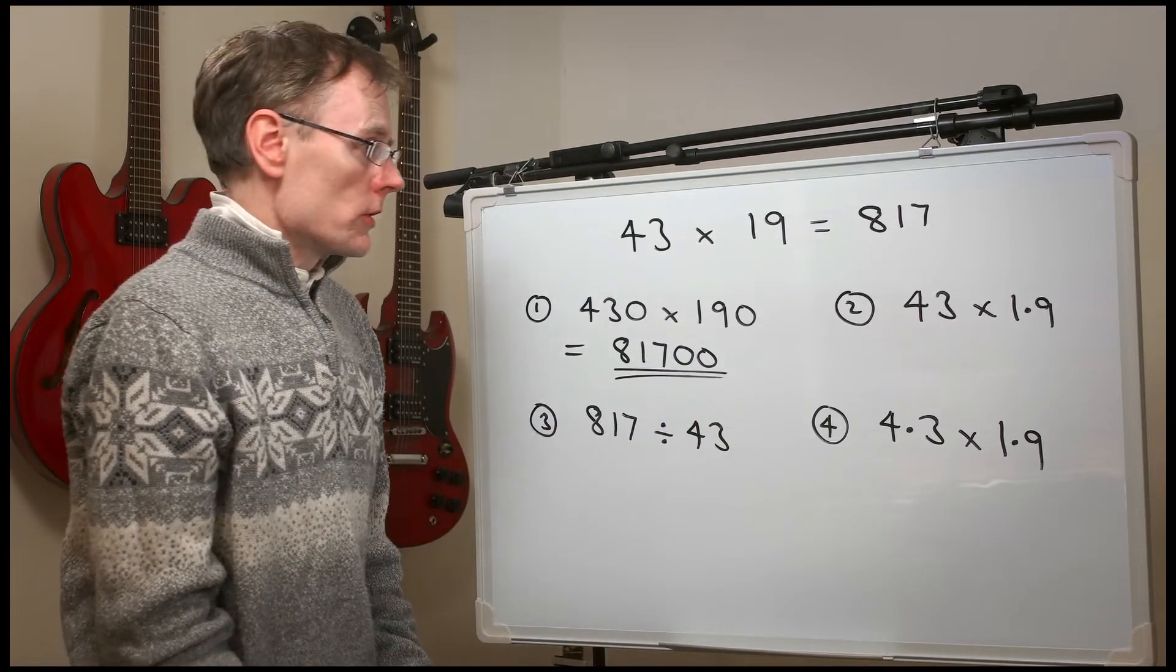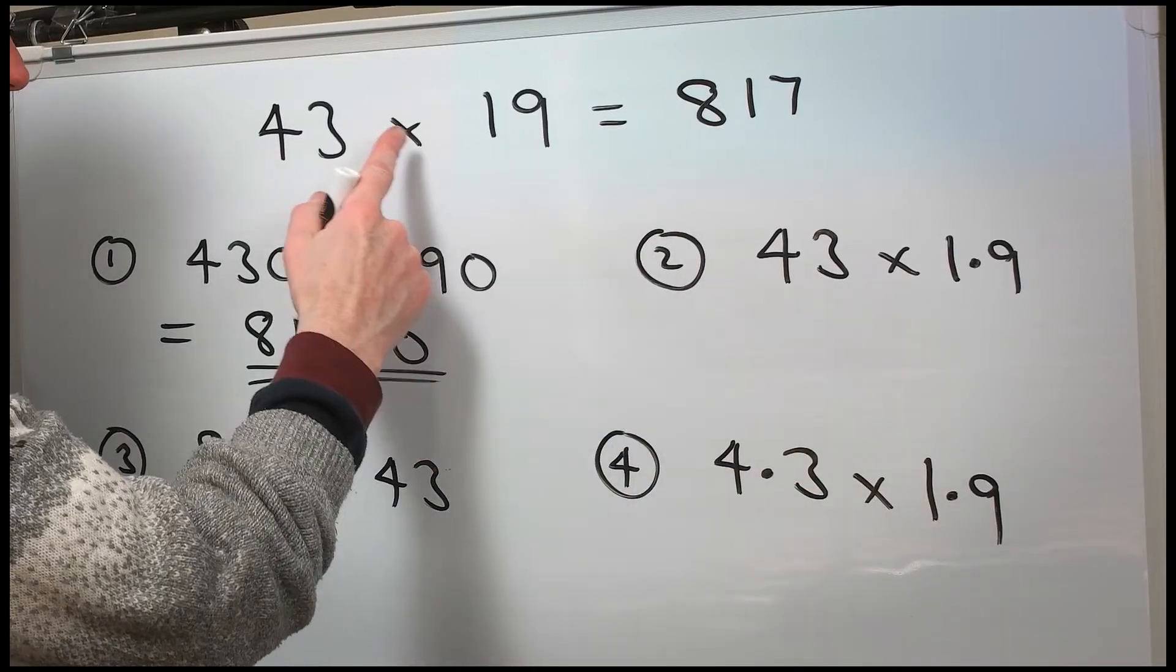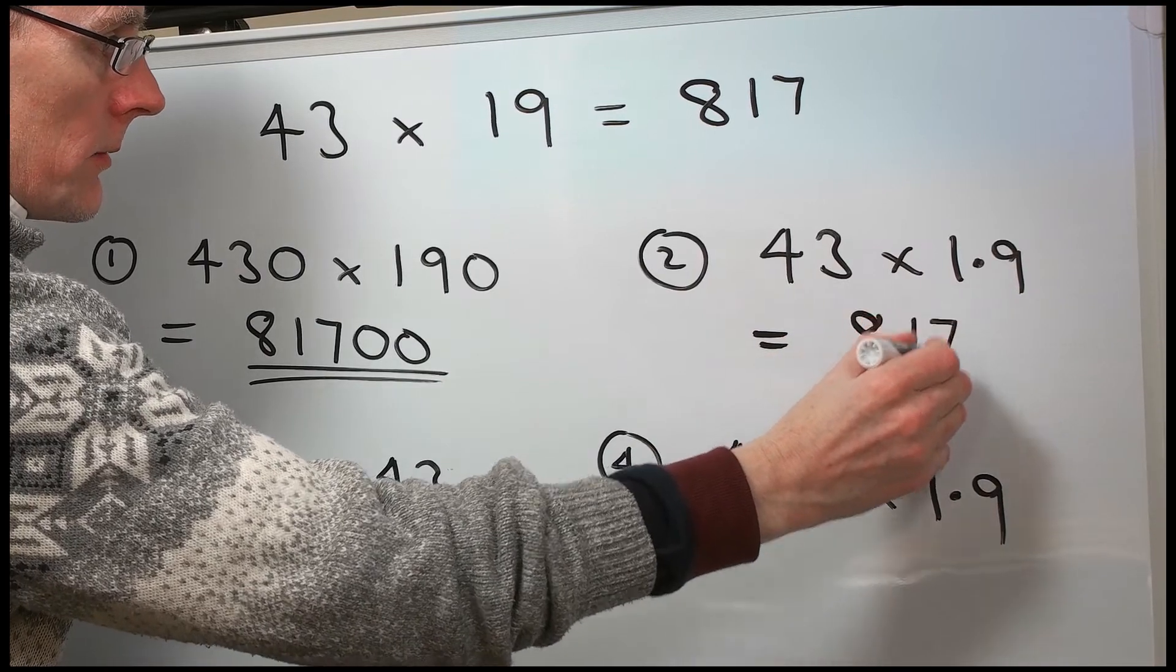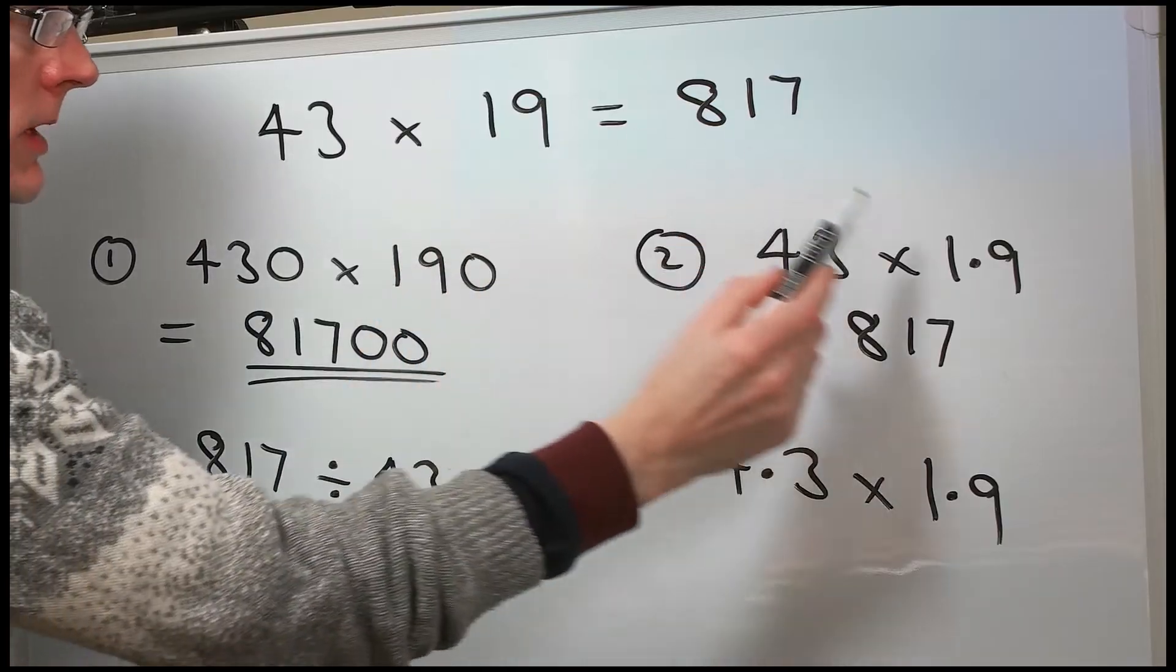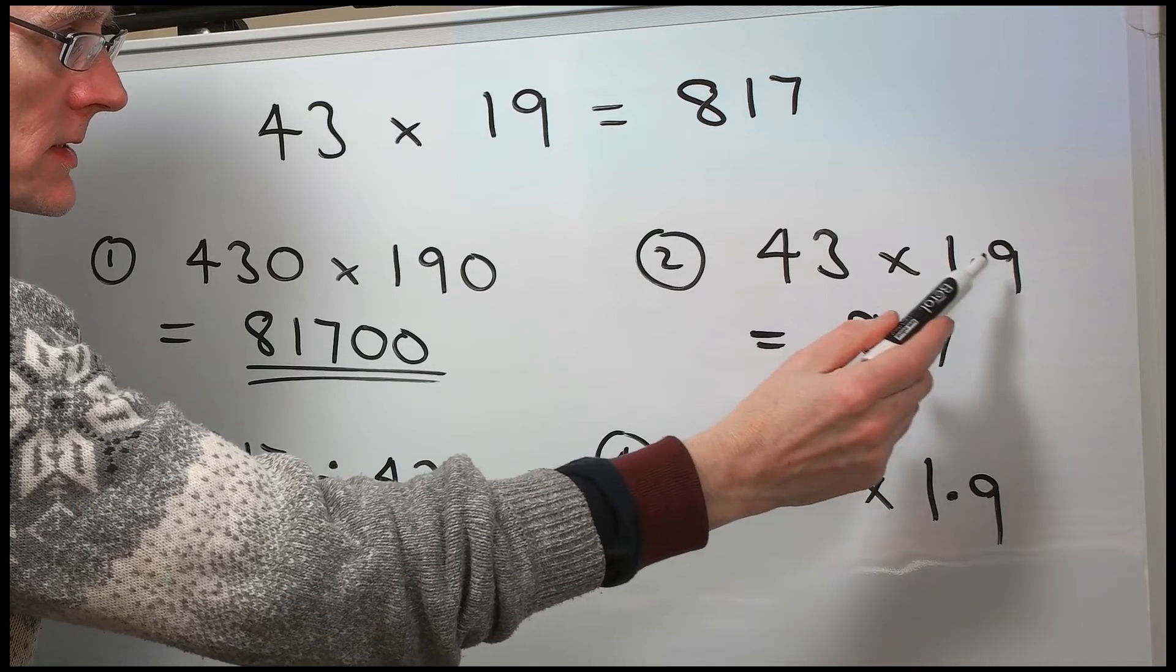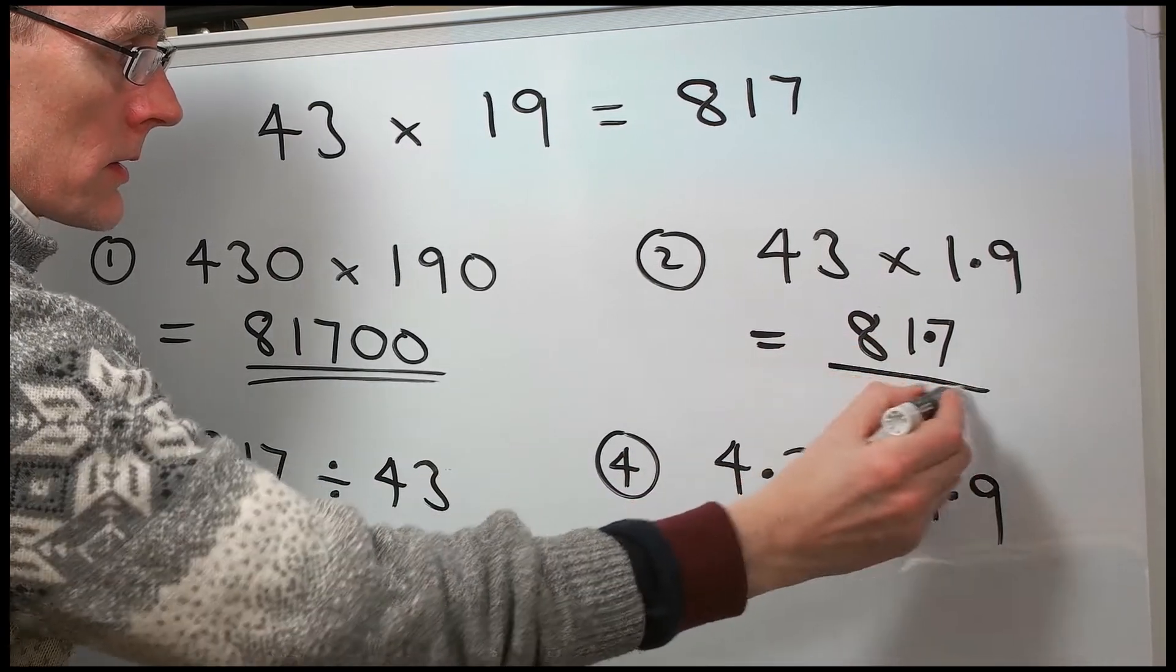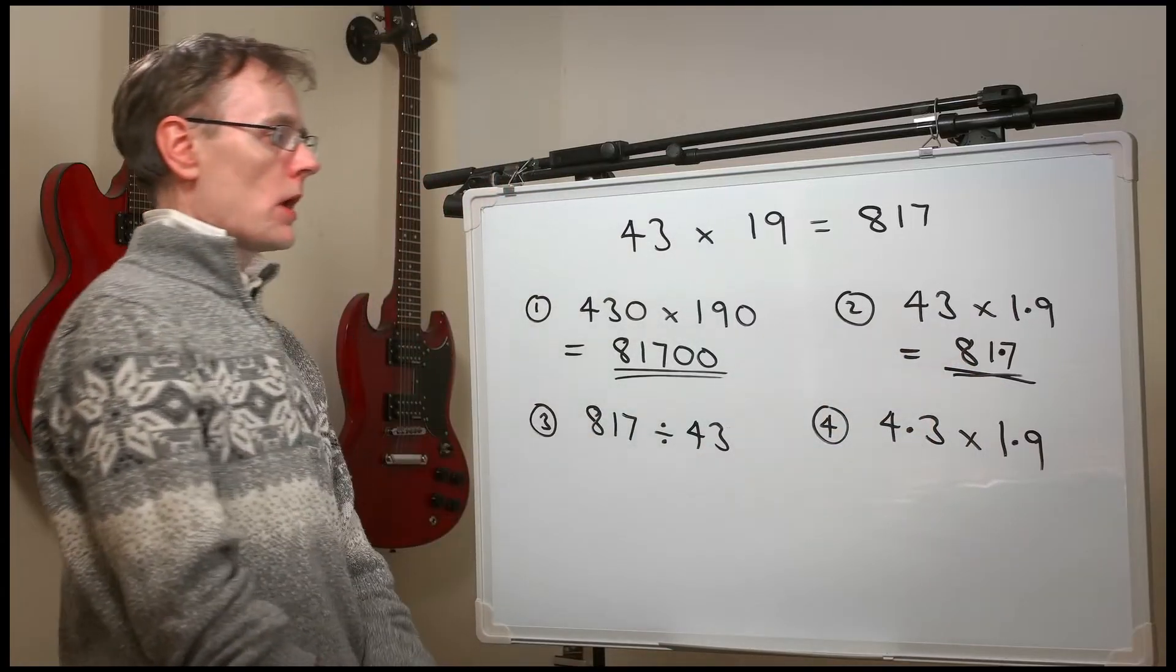Number two. So this one is rather smaller. The answer is not 817. This time 19 has become 1.9. That's 10 times smaller. So the answer is 10 times smaller. 81.7.